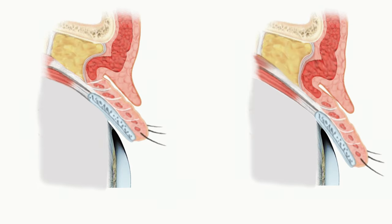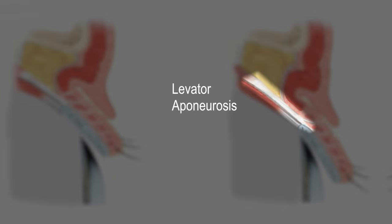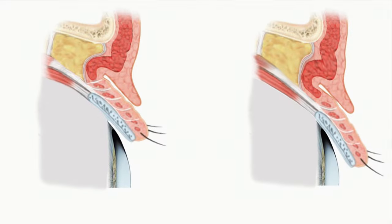Treatment of ptosis requires shortening the levator aponeurosis so that the tarsal plate is brought closer to the muscle.